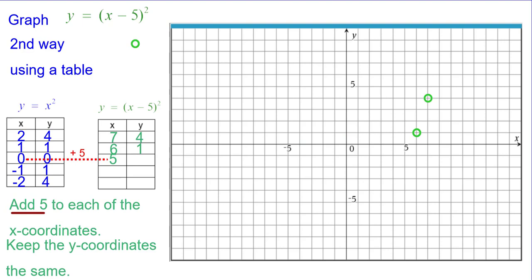0 plus 5 is 5, but the 0 for the y stays the same. Negative 1 plus 5 is 4. 4 comma 1. And negative 2 plus 5 is 3. 3 comma 4. And we're getting that symmetry thing going.